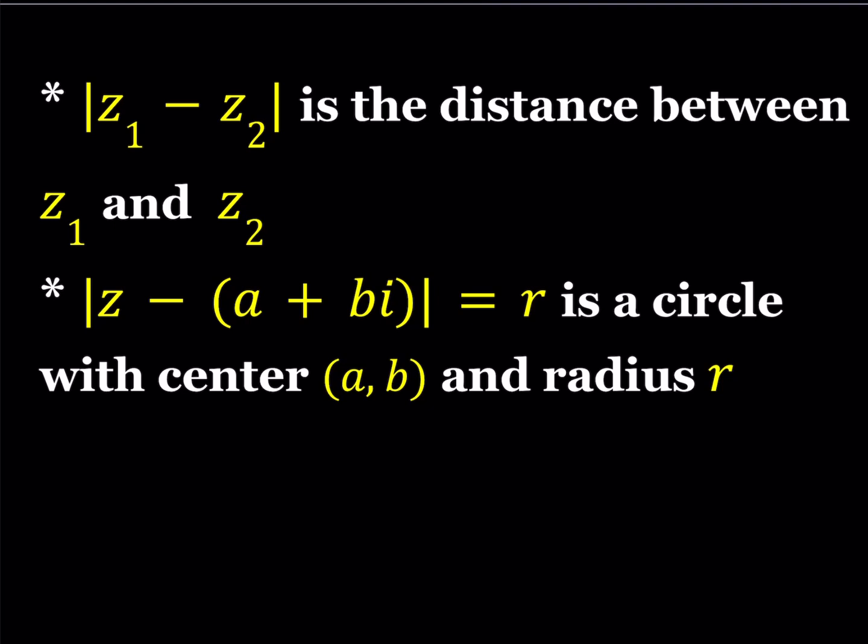If you have two complex numbers z1 and z2, the absolute value of their difference basically represents the distance between those numbers. This is true on a number line for real numbers, and it's also true in two dimensions. z1 and z2 can be expressed as points in the plane, and the distance between them is just the absolute value of their difference.